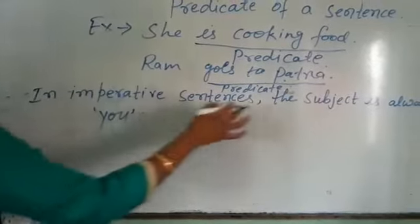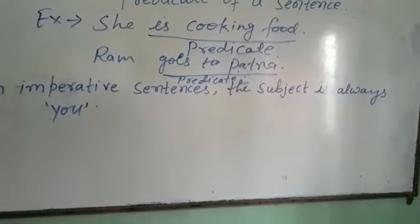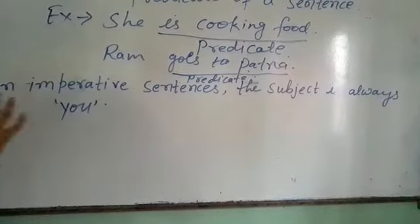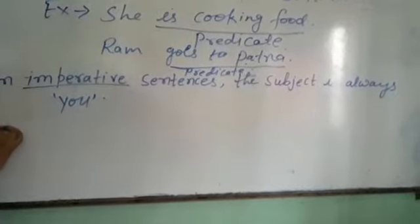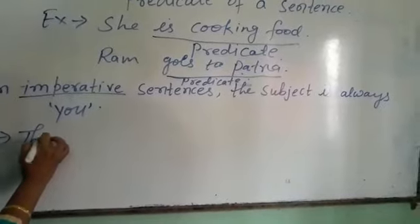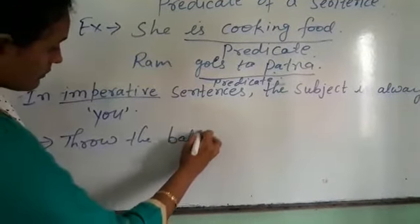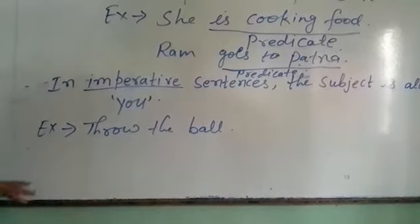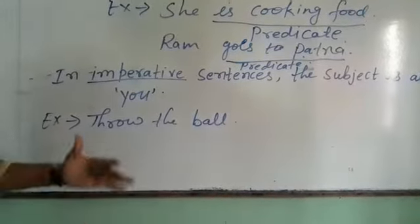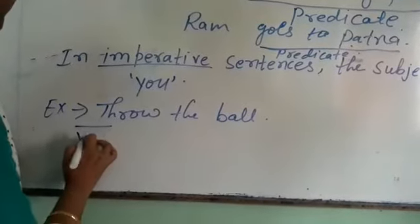In an imperative sentence, the subject is always 'you', because anyone giving advice or a request to another person is addressing 'you'. So in imperative sentences, the subject is always 'you'. Example: 'Throw the ball.' Here, someone is saying this to a person in front of them, so the subject is 'you'.